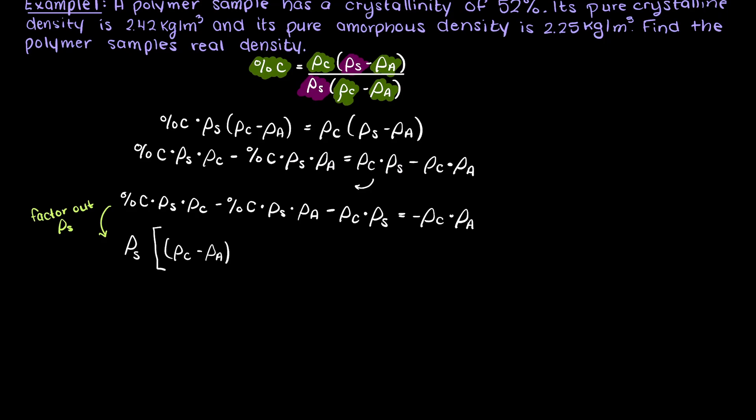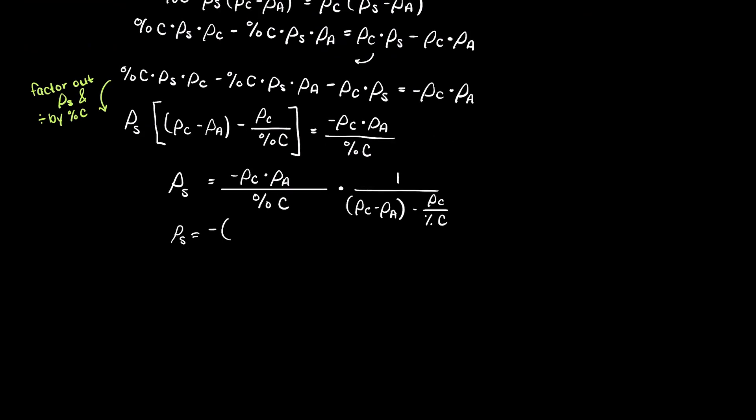Let's take a minute now and rearrange this equation for the polymer's sample density. After rearranging our equation, we have isolated it for our only unknown, and we can now plug in our known variables and solve for the sample's density.